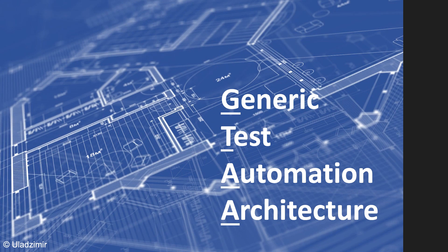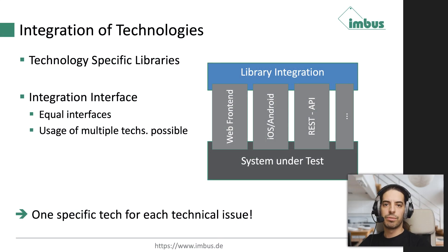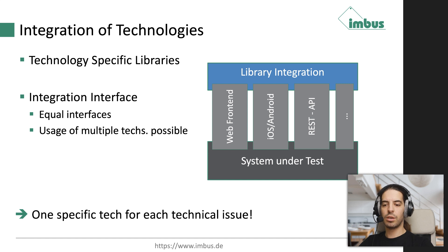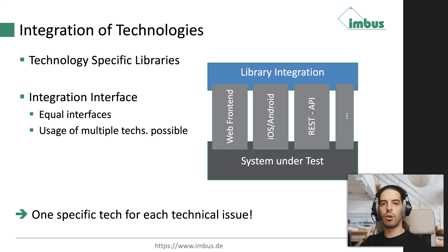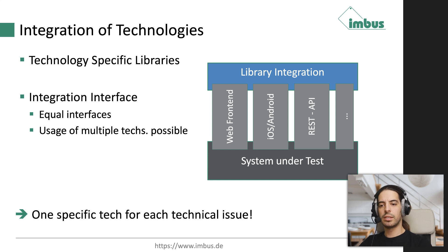Let's have a look at how we could solve the issue of having a lot of technologies under one roof. I want to show you the generic test automation architecture. We start at the bottom with the technologies. It makes no sense to try to deal with a GUI test automation tool for database access — we need different technologies. But if we want to integrate multiple technologies into one tool, we need some kind of equal layer where they're connected — an interface that is the same across all these technologies. We could implement libraries that are technology-specific but have a common interface to the higher level, enabling us to access all these technologies from one engine.